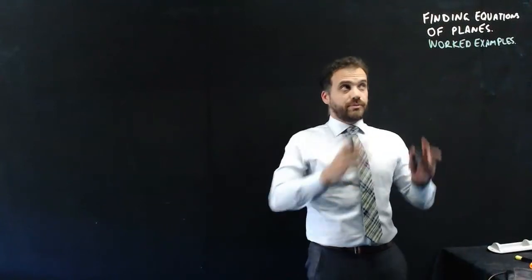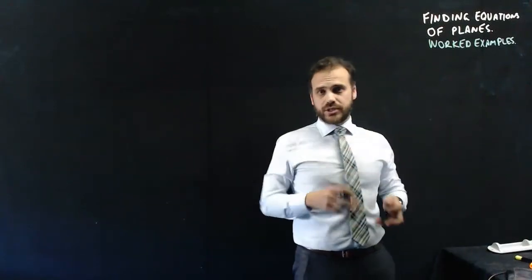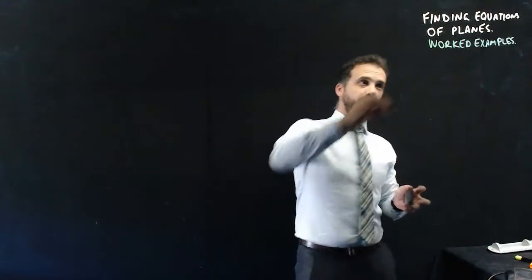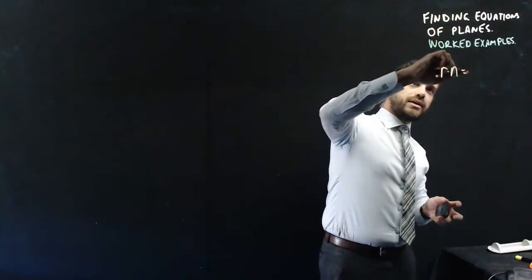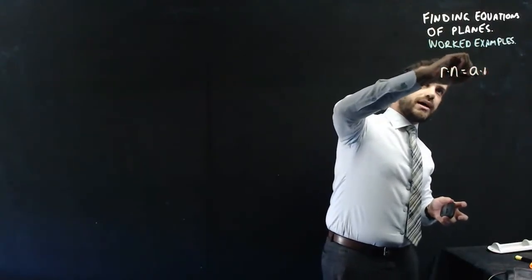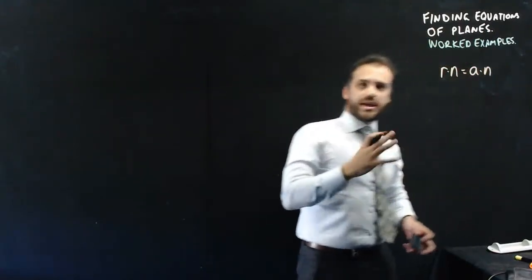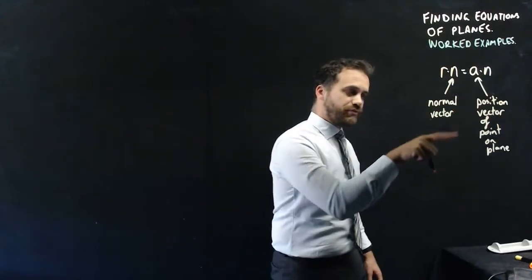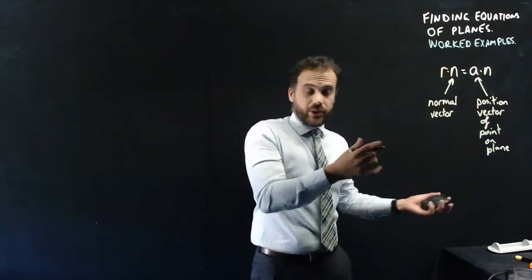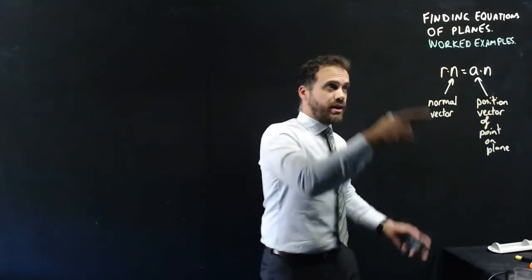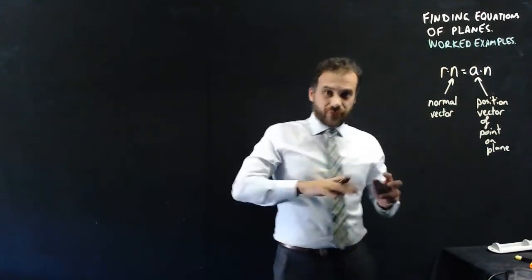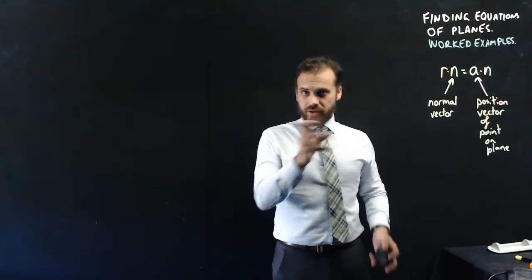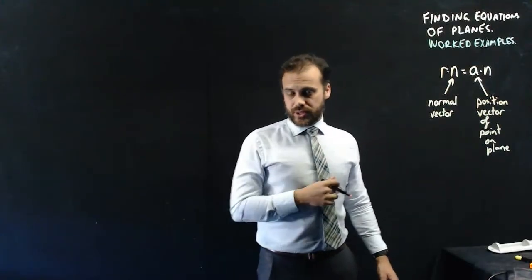This video is going to be worked examples finding equations of planes. To do it, you really need to remember that r·n equals a·n, where n is the normal vector, a is the position vector of a point on the plane, and r is all the other points on the plane. Alright, let's do a question.